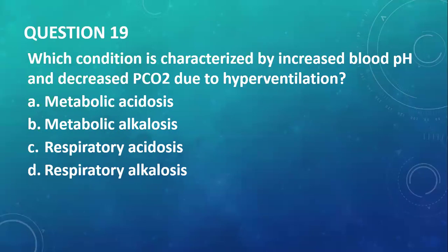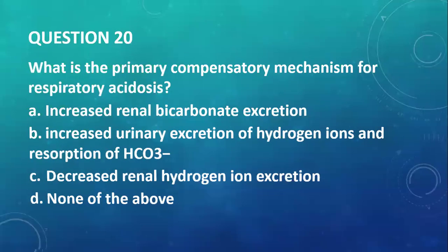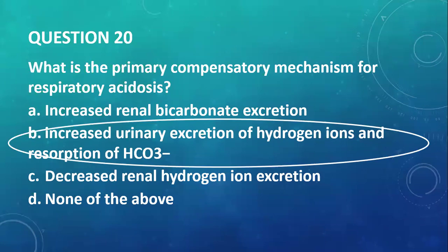Question number nineteen: which condition is characterized by increased blood pH and decreased PCO2 due to hyperventilation? Respiratory alkalosis is the answer. Question number twenty: what is the primary compensatory mechanism for respiratory acidosis? If it's a respiratory origin, the primary compensatory mechanism must be metabolic — in this case, increased urinary excretion of hydrogen ions and reabsorption of bicarbonate by the kidneys.